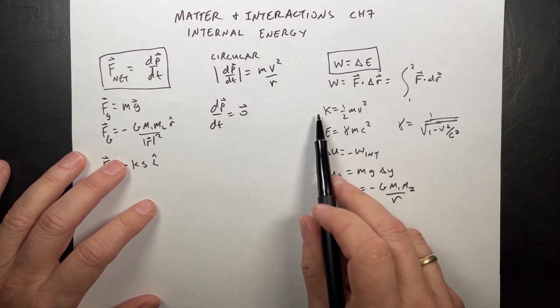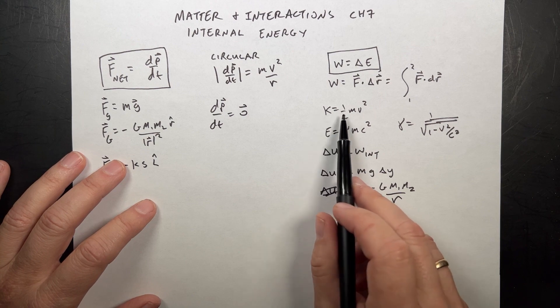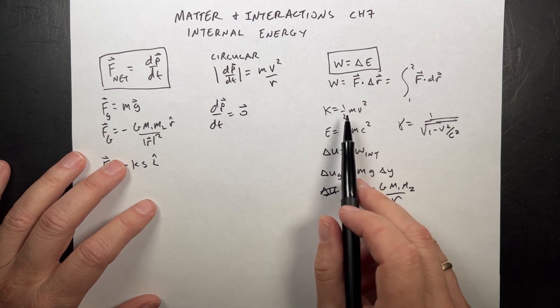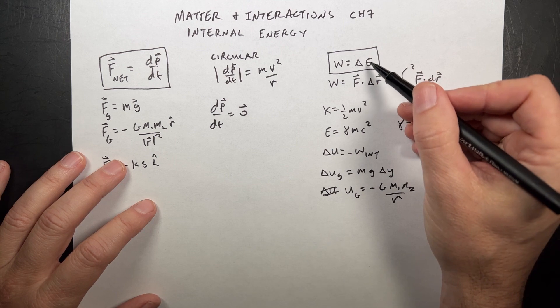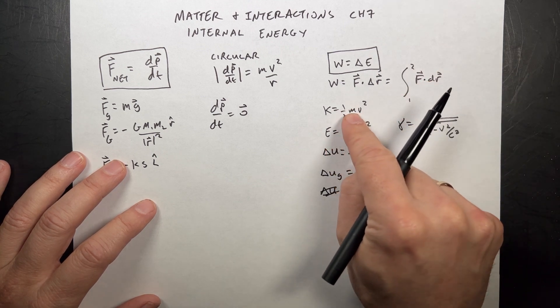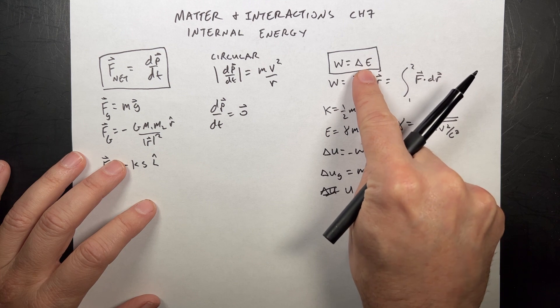We can approximate the energy of motion as kinetic energy, one half mv squared. That's the only kind of energy you start off with, particle energy and kinetic energy, depending on what system you choose.